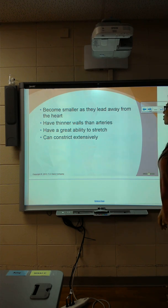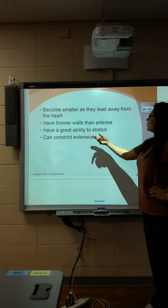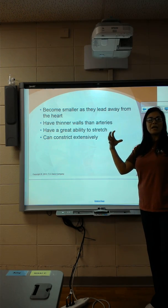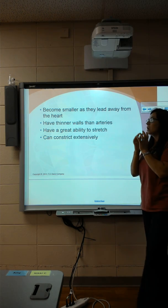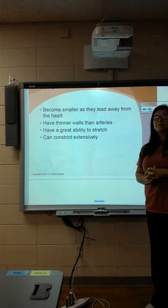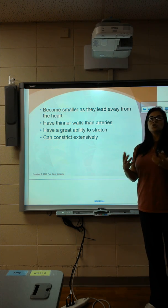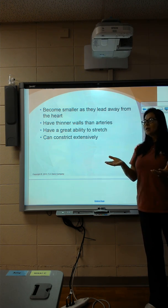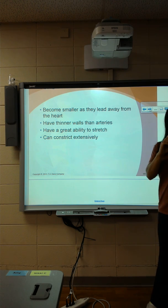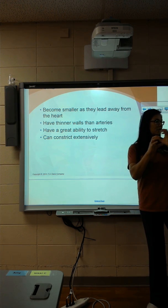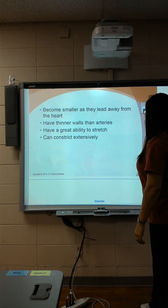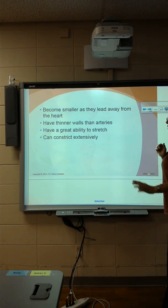Those walls are thinner and have a huge ability to stretch — so dilate and then constrict back down. Your veins are the ones controlling the majority of blood pressure as far as fluctuating it, making it go up or down. That's what we call vasoconstriction and vasodilation. It's our veins that are constricting and dilating, so they play a big part in that, where arteries play a smaller part.